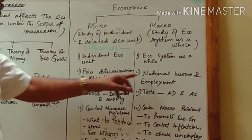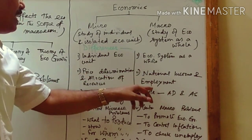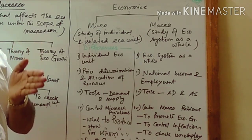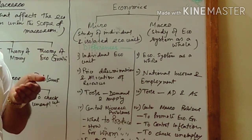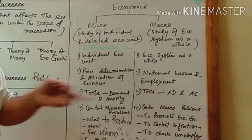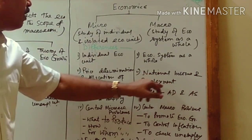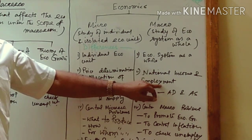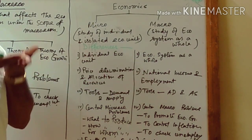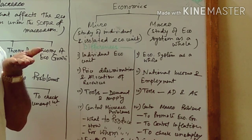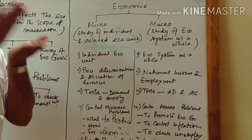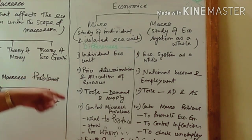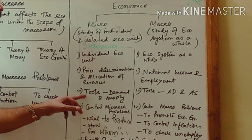Macroeconomics deals with how to determine, calculate, and estimate national income, how to increase national income, what the different methods are, and also employment — how to generate employment. If we can increase employment, our national income will also increase, because employment means more output, and more output means more national income.